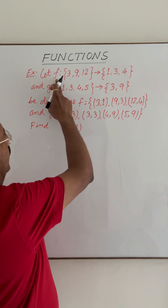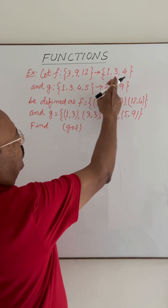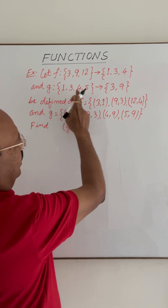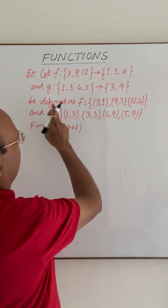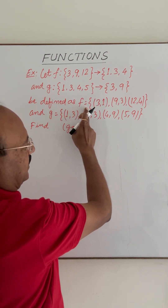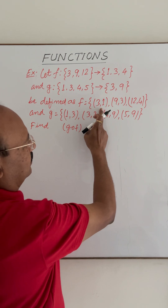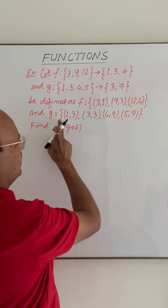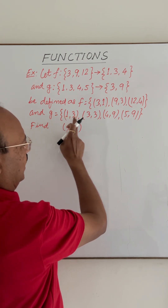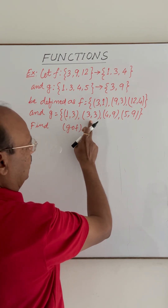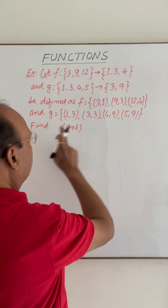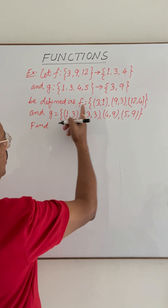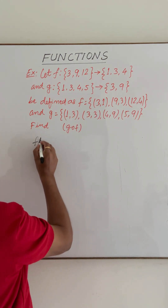Function f is defined from its domain to its range, and function g is having its domain and set as range. Function f is defined by the set of ordered pairs (3,1), (9,3), and (12,4). Function g is defined with the help of ordered pairs (1,3), (3,3), (4,9), (5,9). We have to find g operation f.